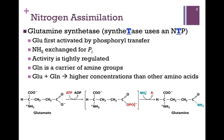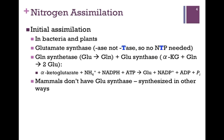Because glutamate and glutamine function so vitally in this process of nitrogen assimilation, they are at higher concentrations than any other of the amino acids. In bacteria and plants, the initial assimilation varies. They also have glutamine synthetase, but in addition, they have the enzyme glutamate synthase.